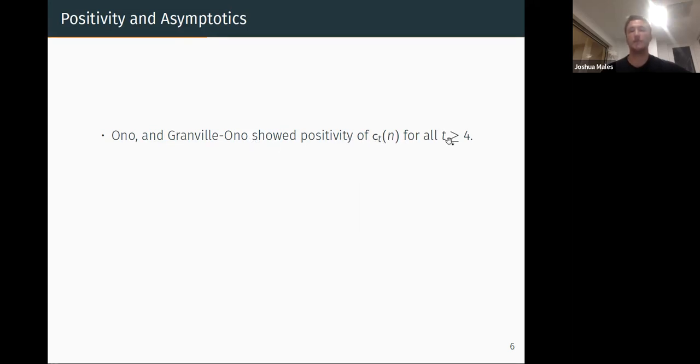Okay, so what was known? Do they exist? Yes. Ono and Granville-Ono showed positivity of c_t(n) for every t greater than four. So whenever you take t greater than four, every integer has a t-core partition. There are similar positivity results for sc_t for most t, so t equals 8 or t greater than or equal to 10.